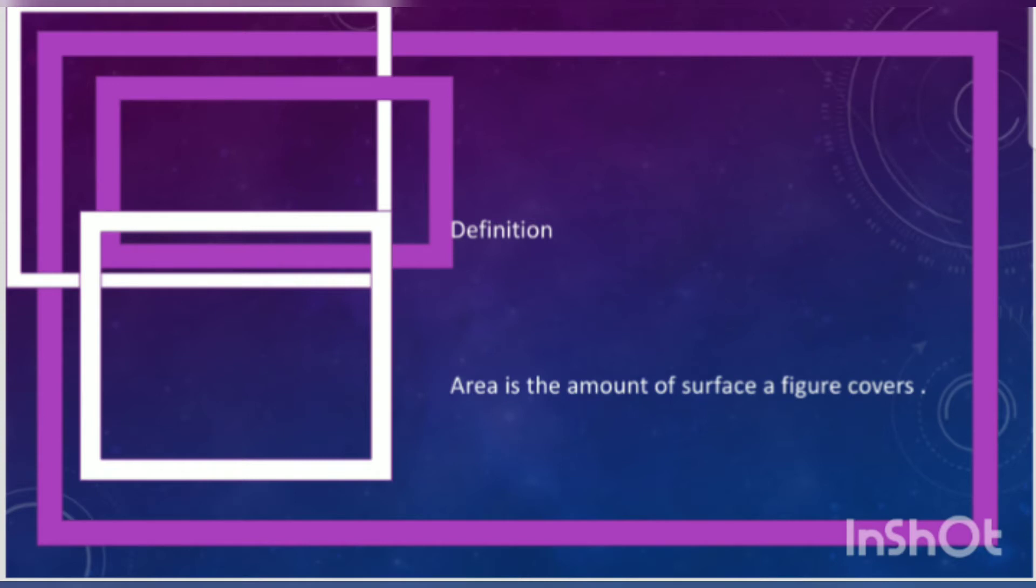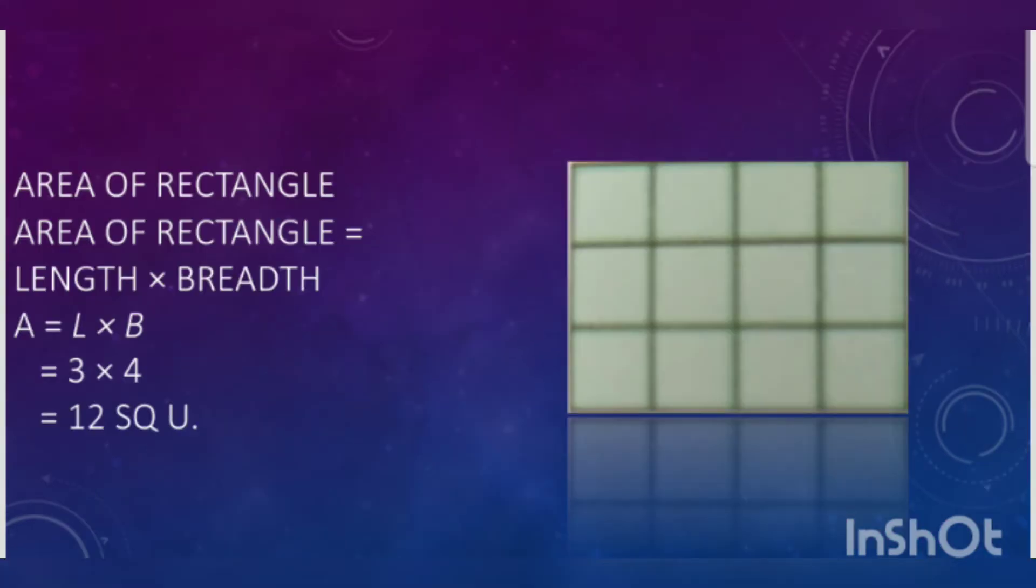Area of rectangle is equal to length times breadth. The formula is A = L × B. L means length, B means breadth. For example, 3 × 4. In the picture there is 3 length and 4 breadth, so three times four equals 12 square units. You have to give square units, otherwise you will not get marks in exams.